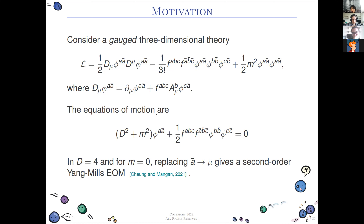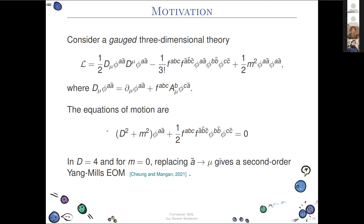The simplest thing you can imagine doing with color-kinematic duality is just taking a color index and replacing it with a Lorentz index. For example, replace a-bar with mu, b-bar with nu, c-bar with rho. This changes the equation of motion, and in four dimensions for m equals zero, doing this gives the second-order Yang-Mills equations of motion.